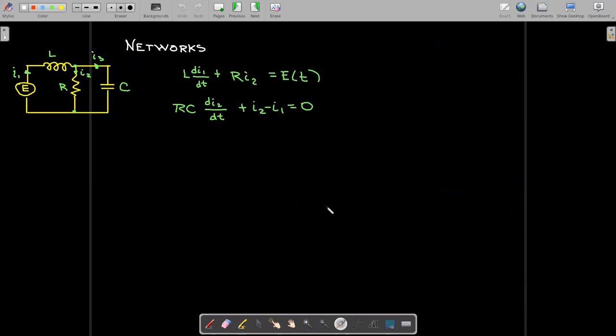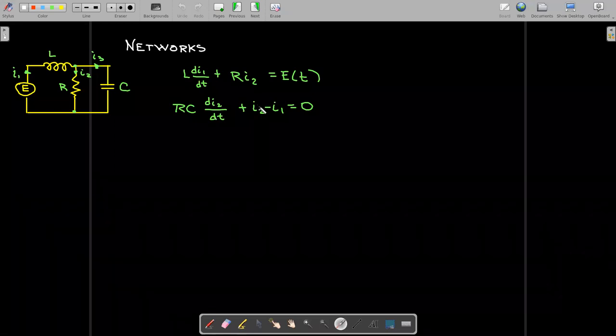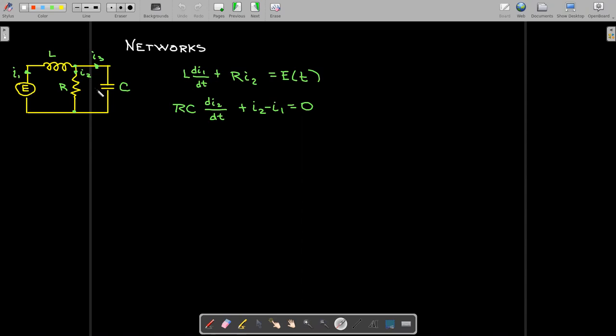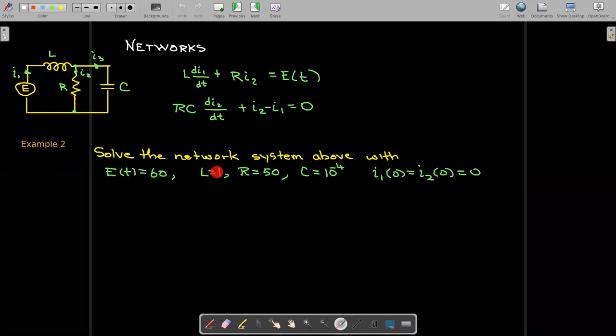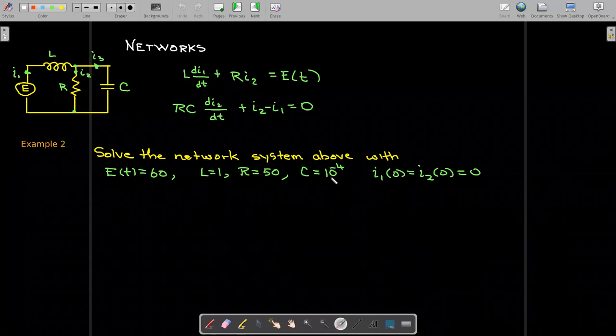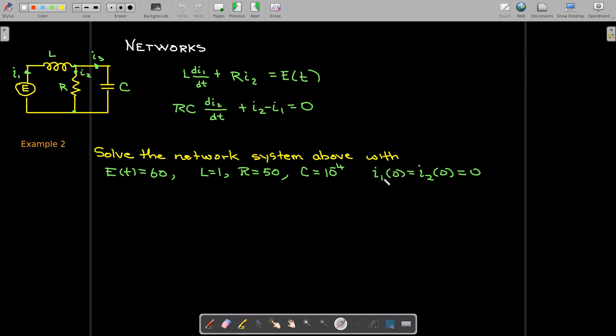You can also get systems of differential equations in networks. And so in this particular circuit that we have here, it leads to these two differential equations in terms of the current I1 and I2. If I needed to find I3, remember that I1 equals I2 plus I3. Well let's solve that system using these values for E of t. We'll have our inductance is 1, the resistance is 50, the capacitance is 10 to the minus 4, and initially there's no current.